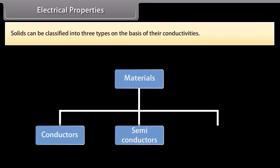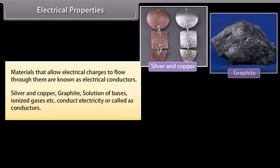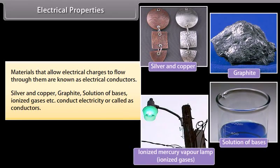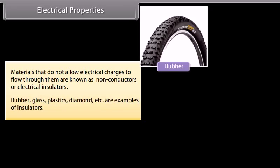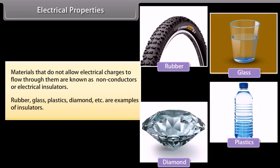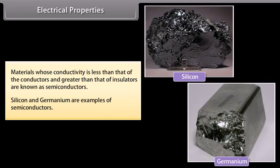Electrical properties: Solids can be classified into three types on the basis of their conductivities. Materials that allow electrical charges to flow through them are known as electrical conductors. Silver and copper, graphite, solution of bases, ionized gases, etc. conduct electricity or are called conductors. Materials that do not allow electrical charges to flow through them are known as non-conductors or electrical insulators. Rubber, glass, plastics, diamond, etc. are examples of insulators. Materials whose conductivity is less than that of conductors and greater than that of insulators are known as semiconductors. Silicon and germanium are examples of semiconductors.